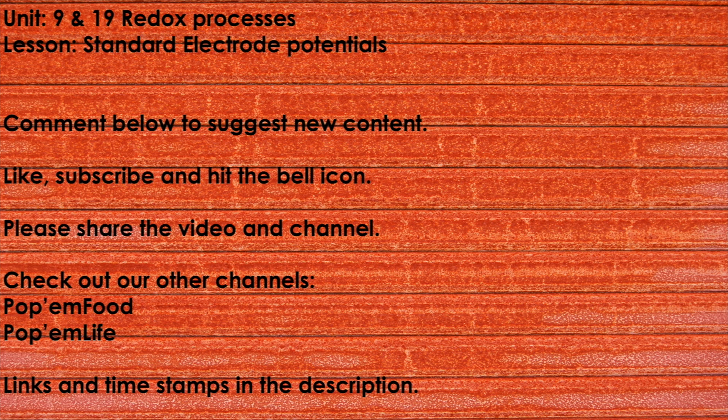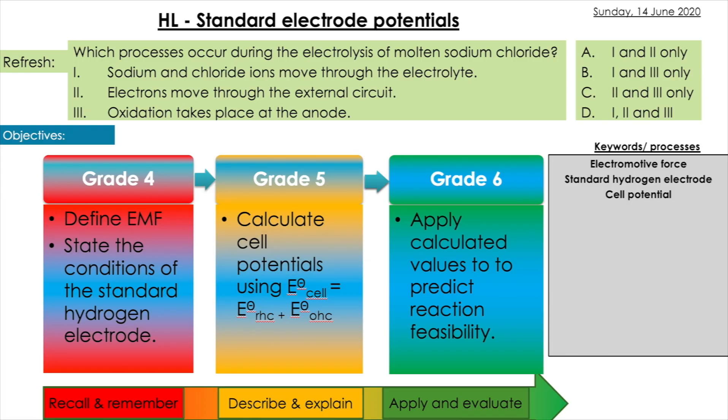Hey guys, welcome back to Problem Up Chem. We are soldiering on through Unit 9 and 19 - Redox Processes. Today we've landed on standard electrode potentials. We're going to be introducing what electromotive force is, what the standard hydrogen electrode is, and then how to calculate electrode potentials and look at how this can help us understand how feasible a reaction is.